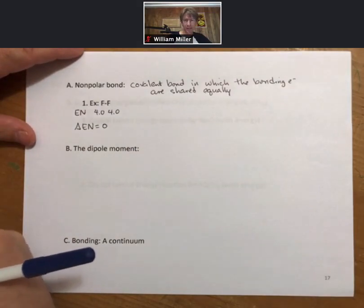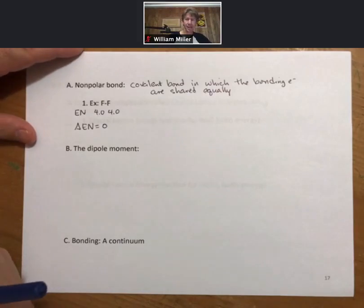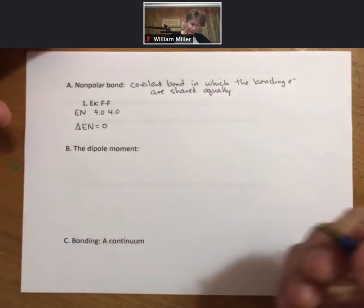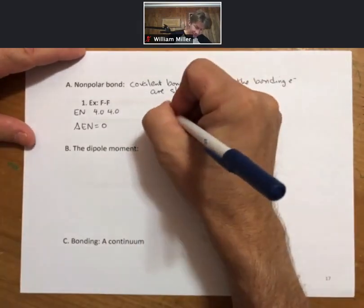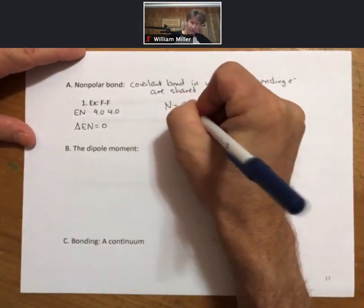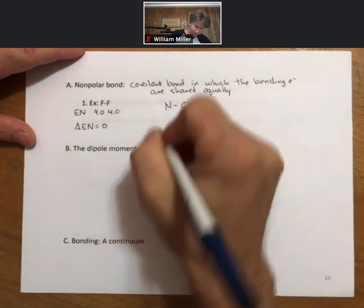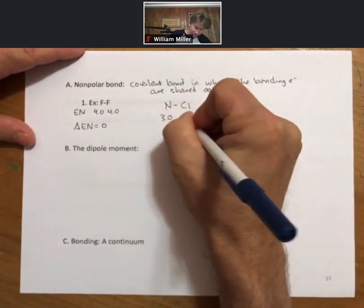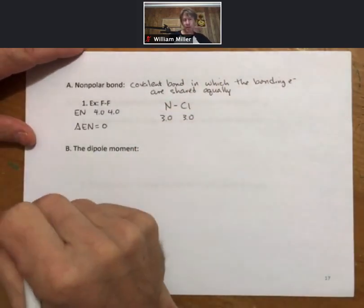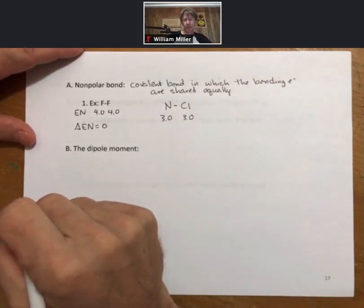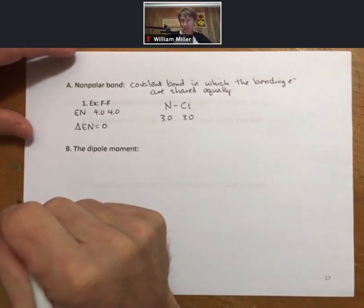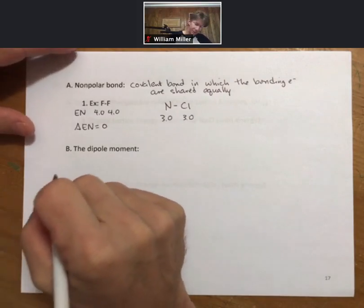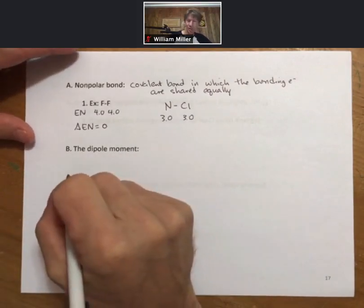Delta EN equals zero. There are a couple other cases. One that comes up relatively frequently is a bond between nitrogen and chlorine. Both have electronegativity scores of 3.0. Although there's a slight difference between them, for us there is no difference, so this would be a nonpolar bond as well.